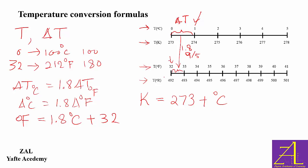And the relationship between Rankine and Fahrenheit: degrees Rankine is always 459.67, or if you want to round it, 460, plus degrees F.